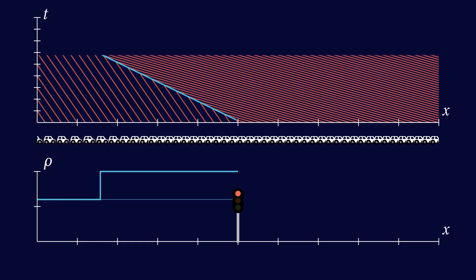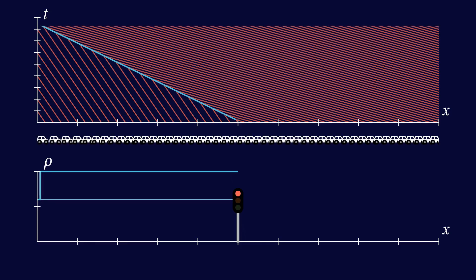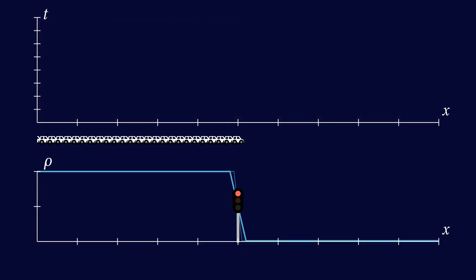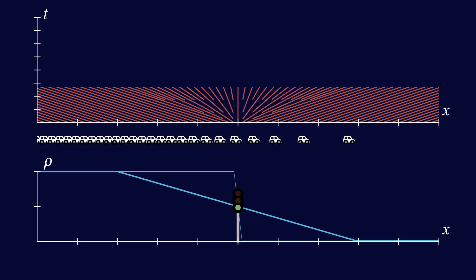When the light finally goes green, the initial traffic density is at its maximum on the left and zero on the right. This gives us the most extreme version of characteristics fanning out. The corresponding density plot after some time is a linear interpolation between bumper-to-bumper traffic on the left and an empty road on the right.